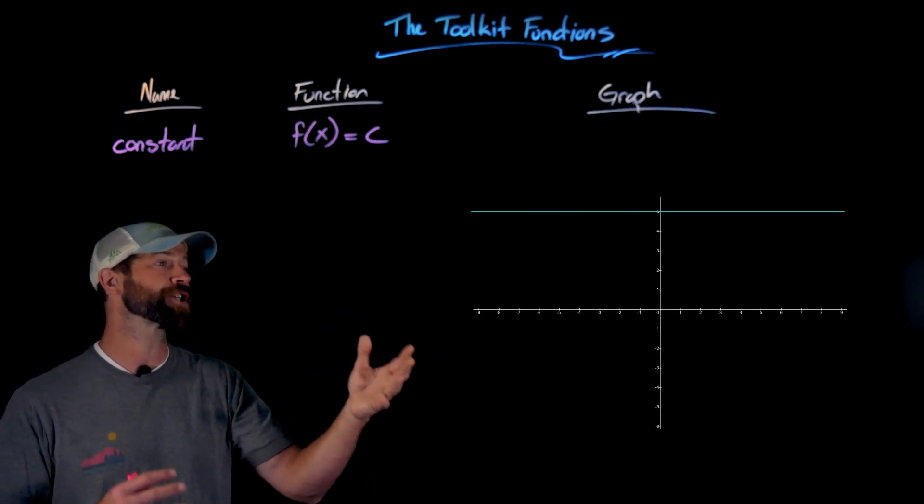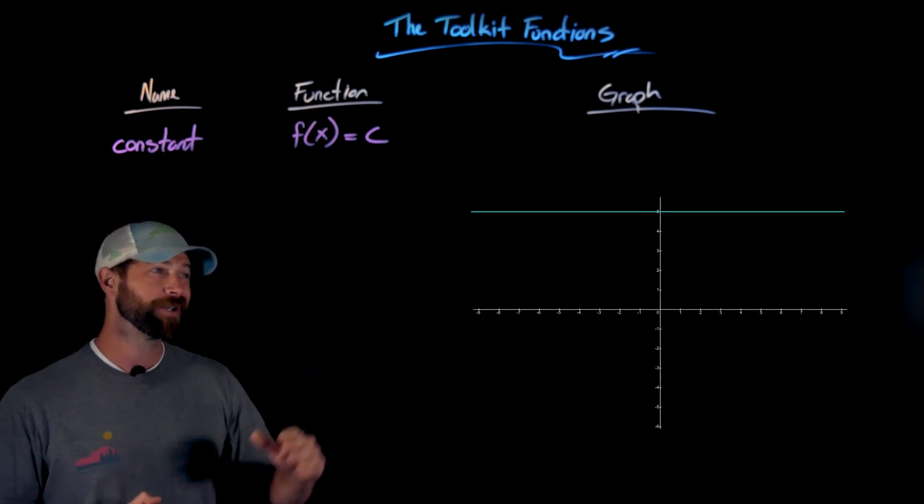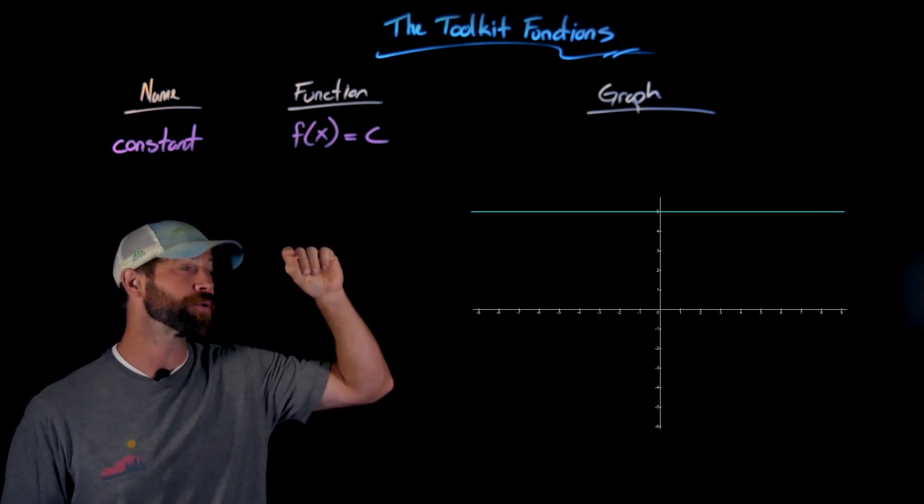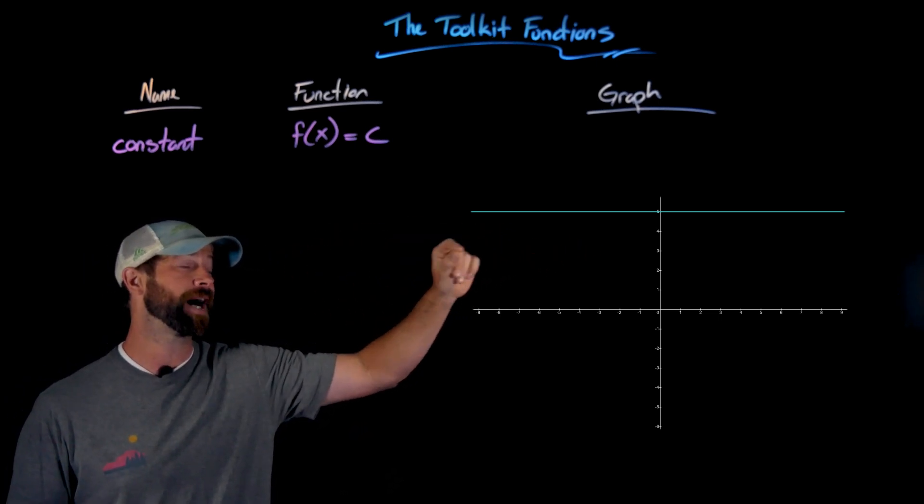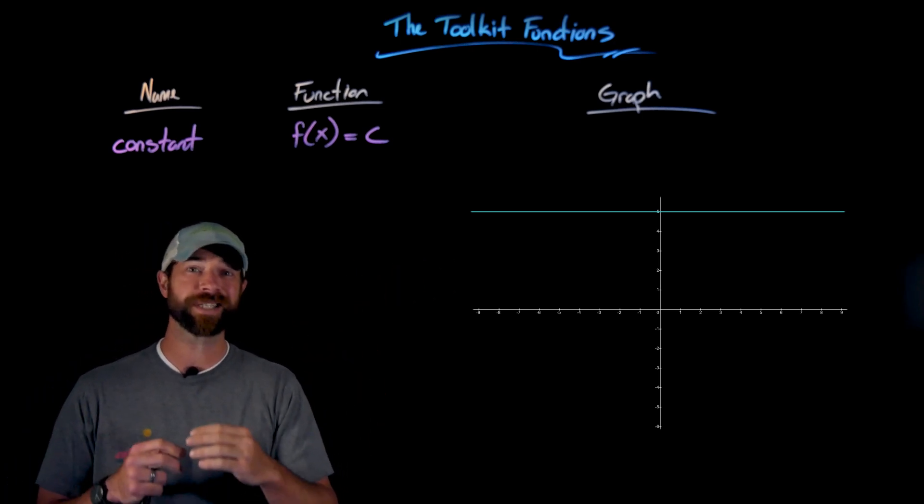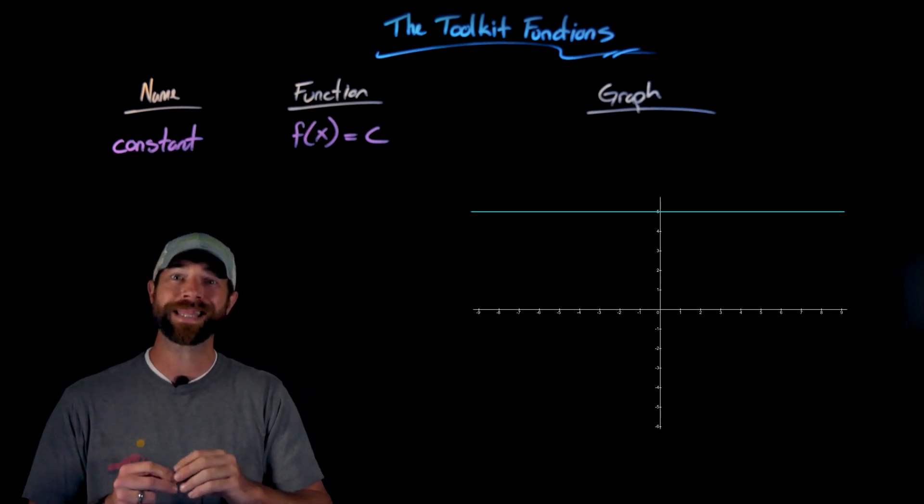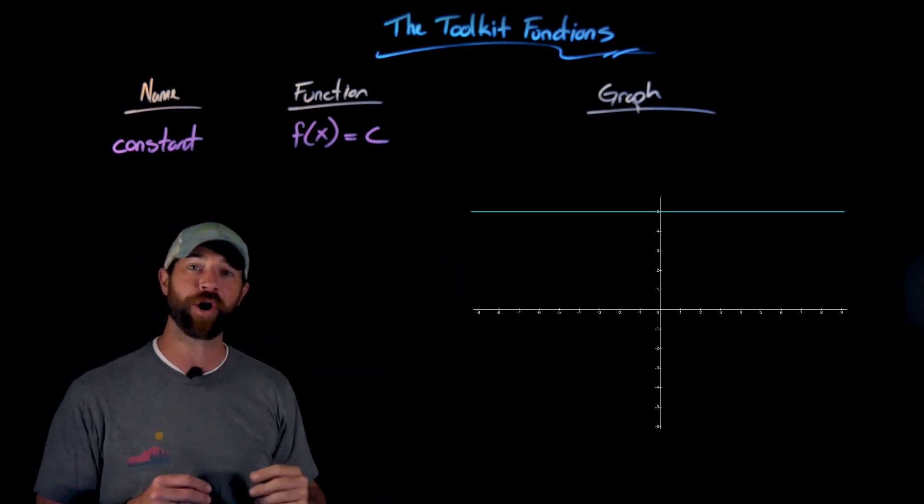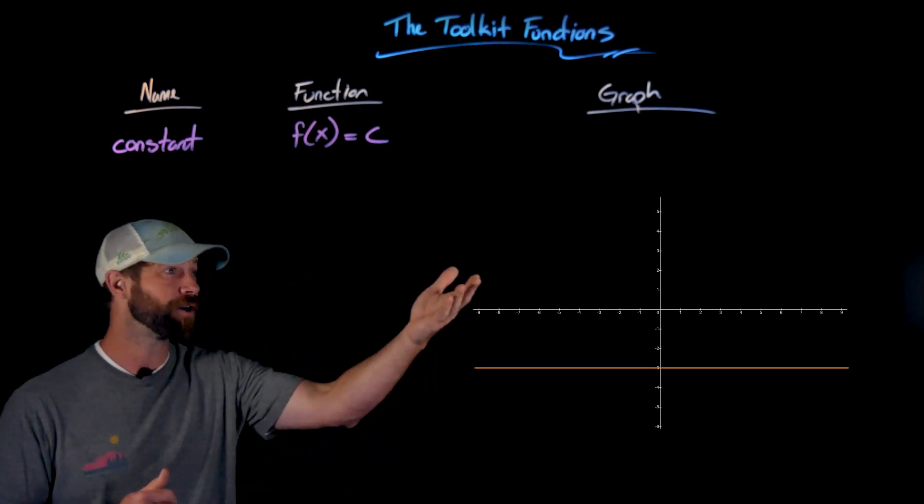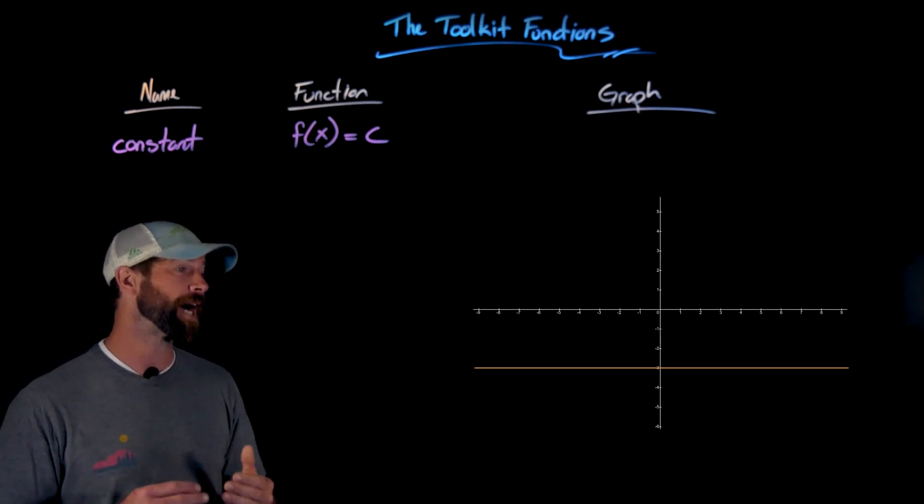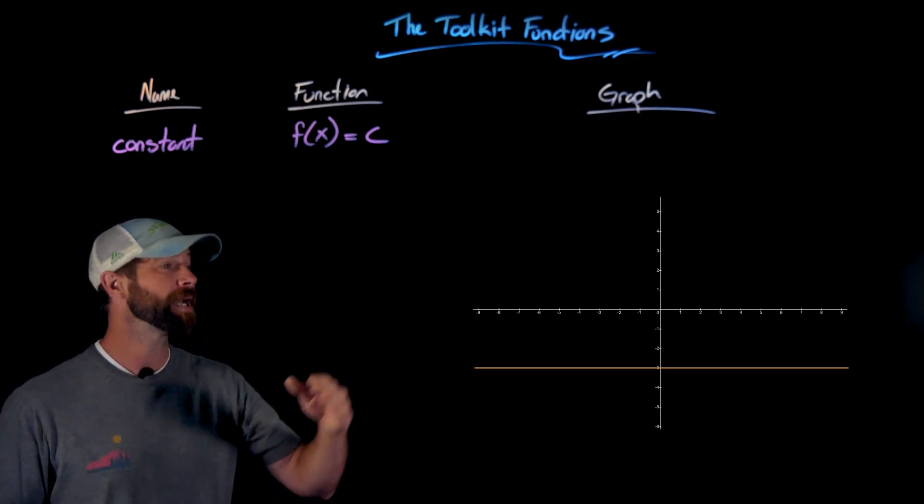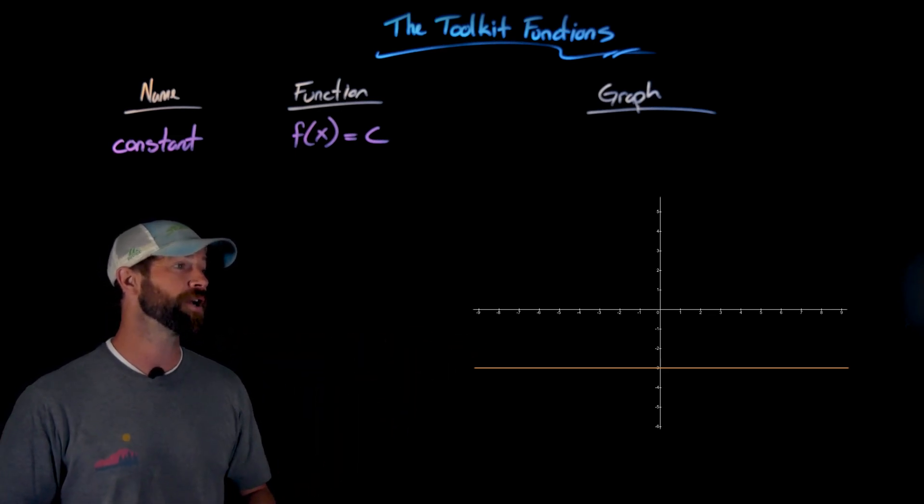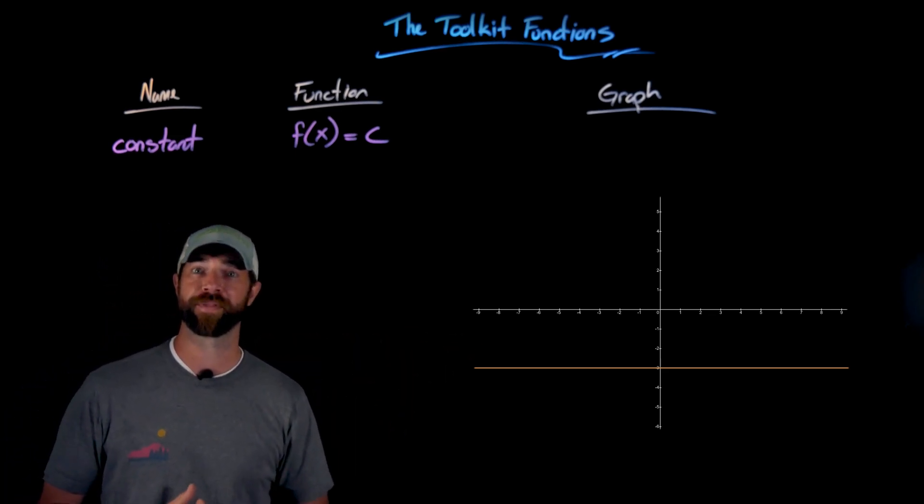First, here's the function f(x) equals 5. You'll notice it's this straight line, completely horizontal, going through the output value of 5. Importantly, no matter what you input, the output is always the same. We call this a constant function because the output is exactly the same. Here's an example of f(x) equals negative 3—now below the x-axis, a completely horizontal line going through the output value of negative 3.